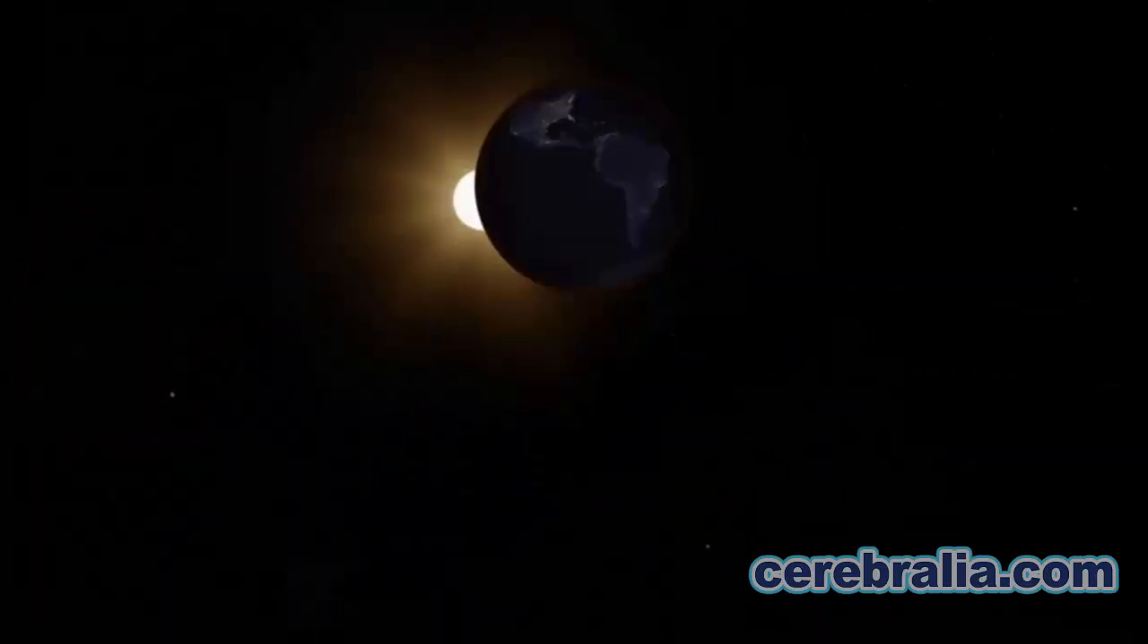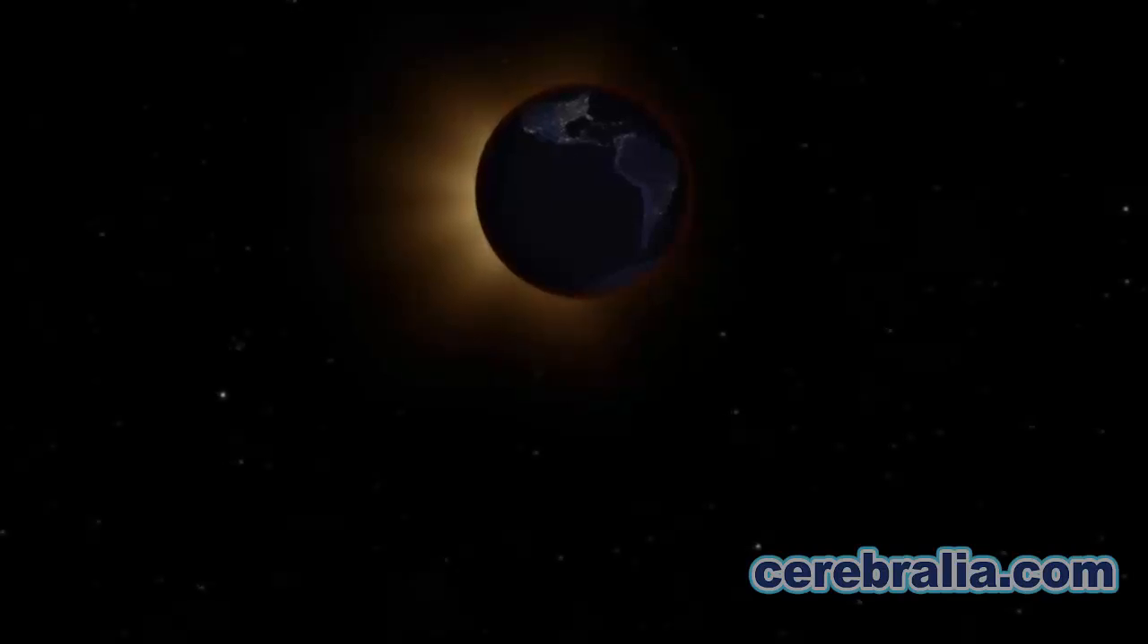A lunar eclipse happens when the Earth gets between the Sun and the Moon, and the Earth's shadow makes the Moon dark. For a lunar eclipse to occur, the three celestial bodies—the Earth, the Moon and the Sun—must be perfectly aligned. In this position, the Earth blocks the Sun's light, preventing it from reaching the Moon.